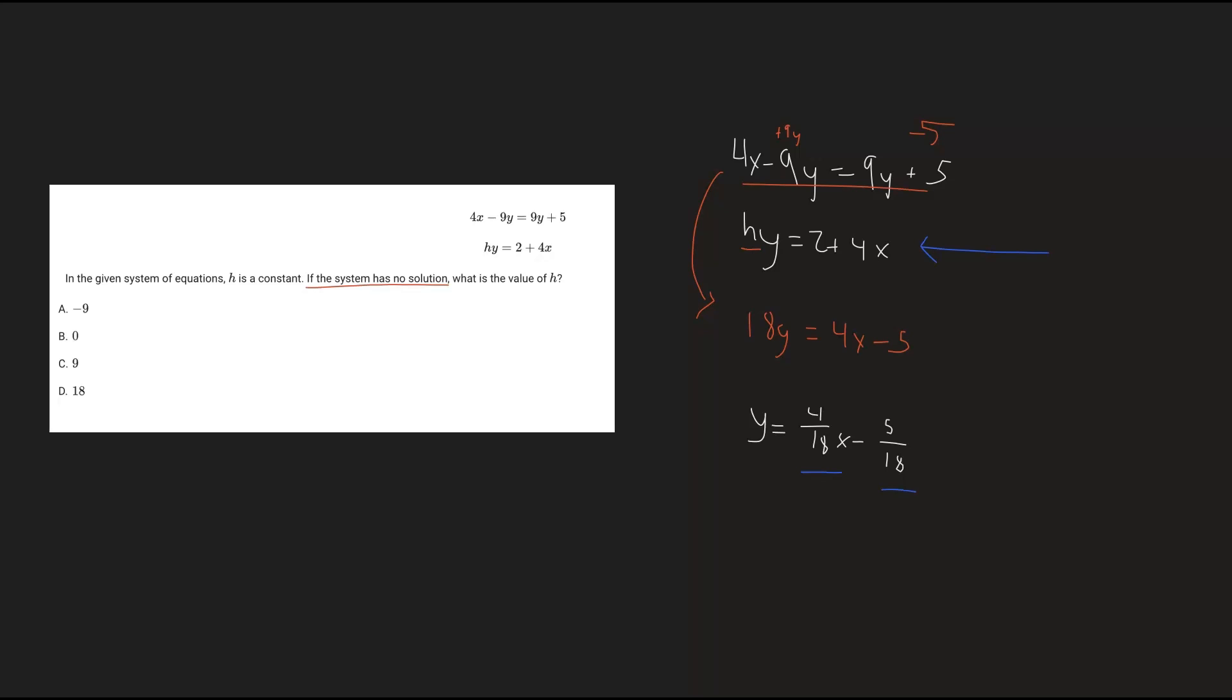So we have hy equals 2 plus 4x. So let's zoom in on this slope. The current slope is 4 as a value of 4. Let's just ignore the x for now. So the current value of 4 is much more different versus the slope that we want, which is 4 over 18. So how do we go from 4 to 4 over 18? Well, we can do this by just multiplying 4 by 1/18.